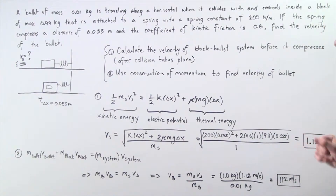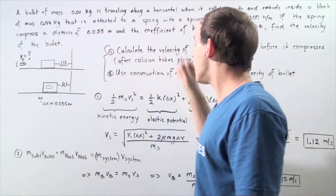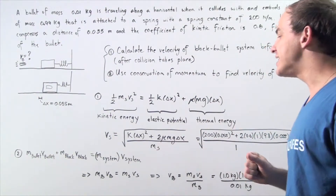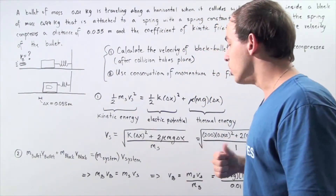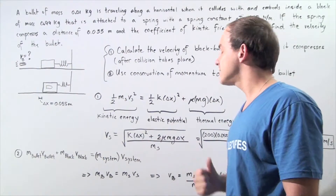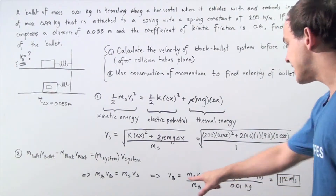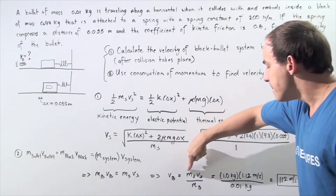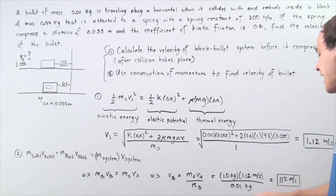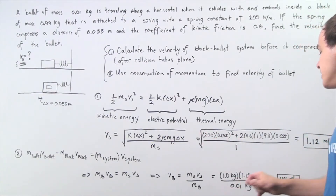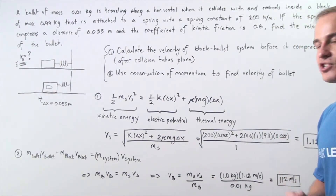We know vs is 1.12 meters per second, ms is 1 kilogram — the sum of 0.01 and 0.99 — and the mass of the bullet mv is 0.01 kilograms. We rearrange the equation, dividing both sides by mv, to solve for vb. Multiplying ms times vs gives 1 kilogram times 1.12 meters per second, then dividing by the bullet mass 0.01 kilograms gives a velocity of 112 meters per second.